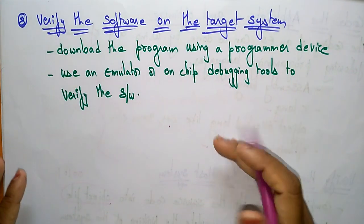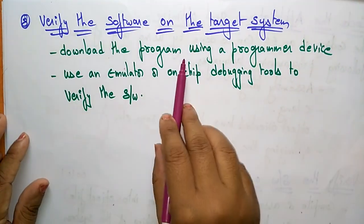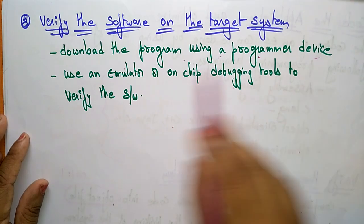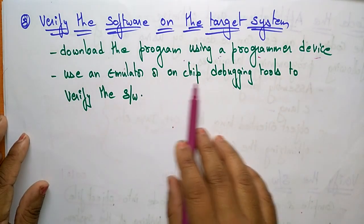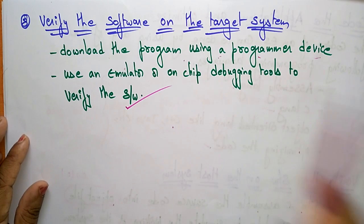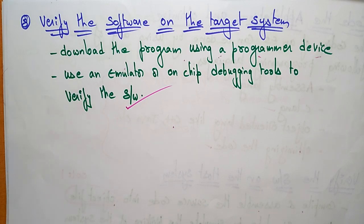The eighth and final step is to verify the software on the target system. First, download the program using a programmer device, then use an emulator or on-chip debugging tools to verify the software on the target system.